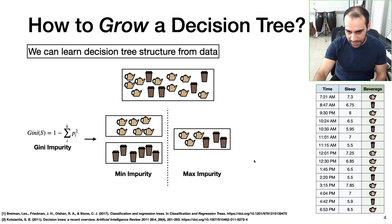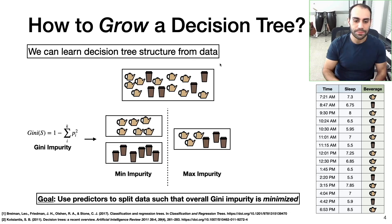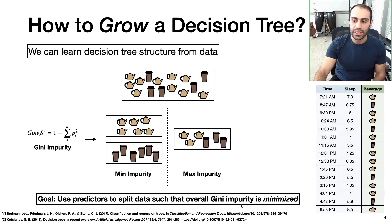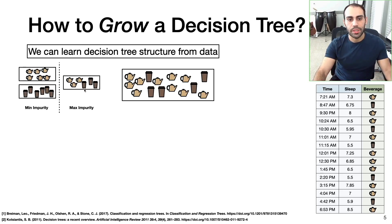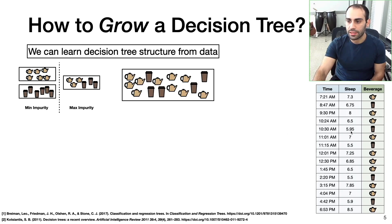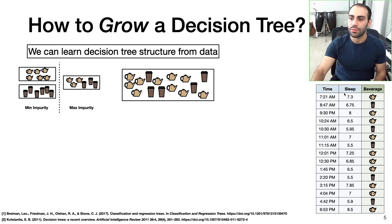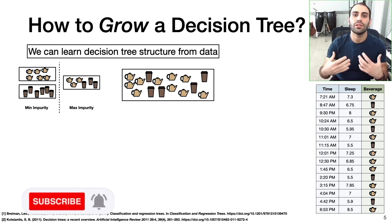Why are we talking about Gini impurity? Because we can use it to learn decision tree structure from data. The goal when growing decision trees is to use our predictor variables to split our data such that the overall Gini impurity is minimized. Growing a decision tree is essentially an optimization problem. Consider this dataset on the right, where each row is represented as an icon in this sample. Our goal is to use our predictor variables — time and amount of sleep — to split our data and minimize the overall Gini impurity.